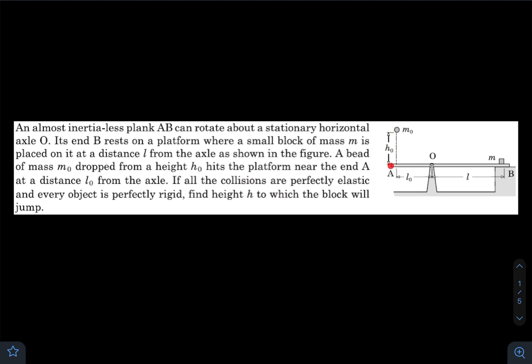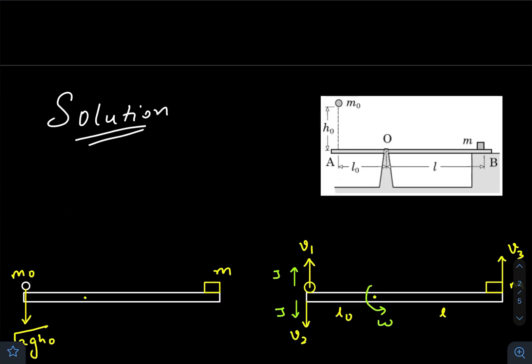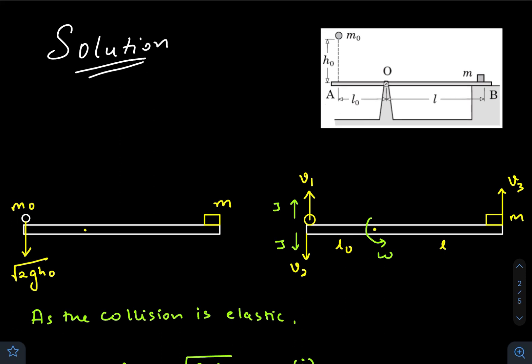plank, so this end will gain some velocity. As a result, this end will also gain velocity and push the block vertically upward. It will reach a maximum height, so we need to find that height. Let's come to the solution. When this mass falls freely and reaches point A, it gains velocity √(2gh₀).